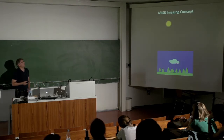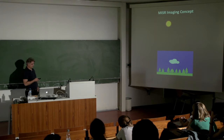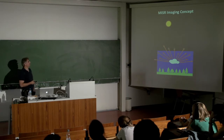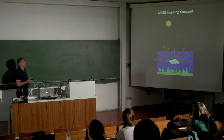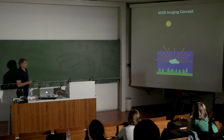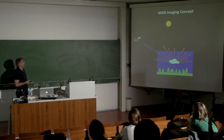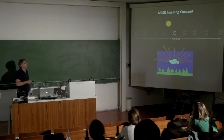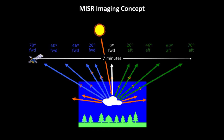So how does the MISR imaging work? You have a scene — let's focus on a cloud. You have the sun, and as the sun radiation hits the cloud, the cloud or any other scene reflects radiation in all different directions. As the MISR instrument comes along, it basically samples this angular reflected radiation at nine specific angles. A traditional instrument usually gives you the nadir or near-nadir view, but we have nine images collected in seven minutes.